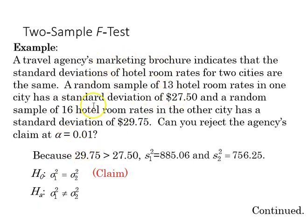The null is that they're equal because that's what is being claimed here, that the standard deviations are no different, and the alternative is that they are not equal. This is going to wind up being a two-tailed test.